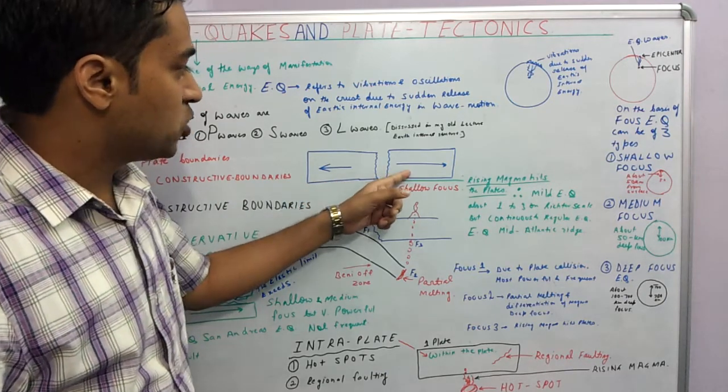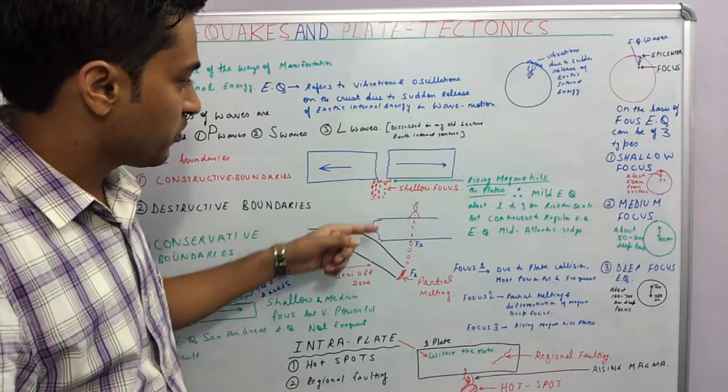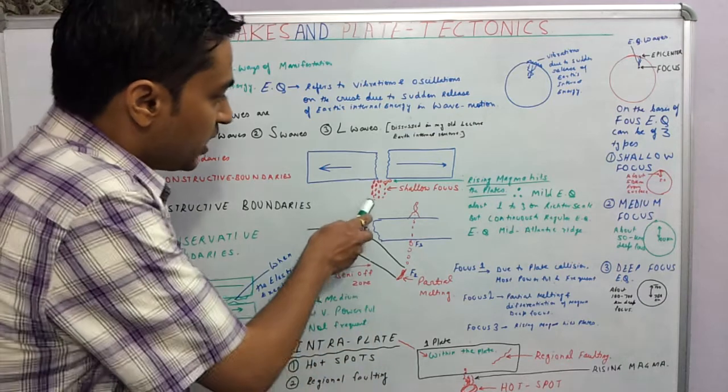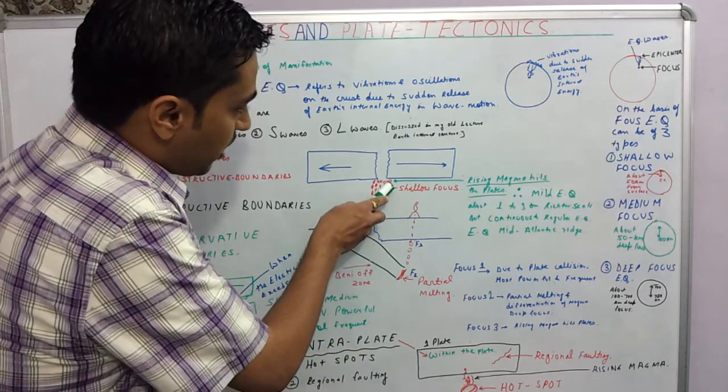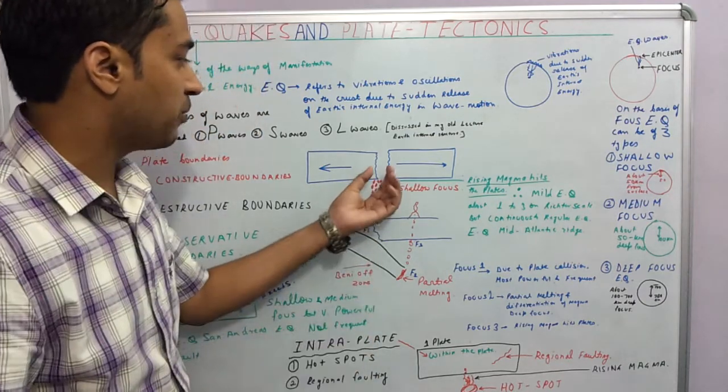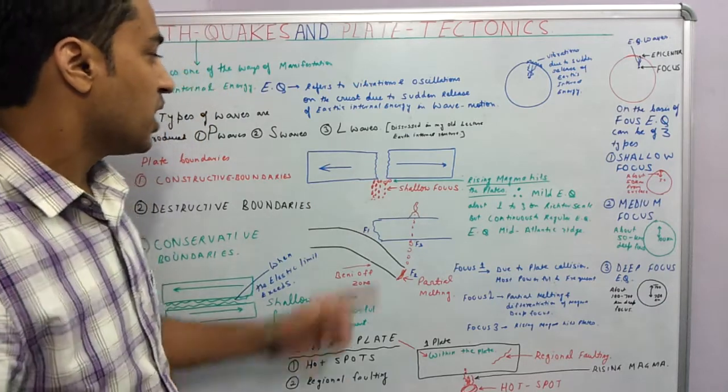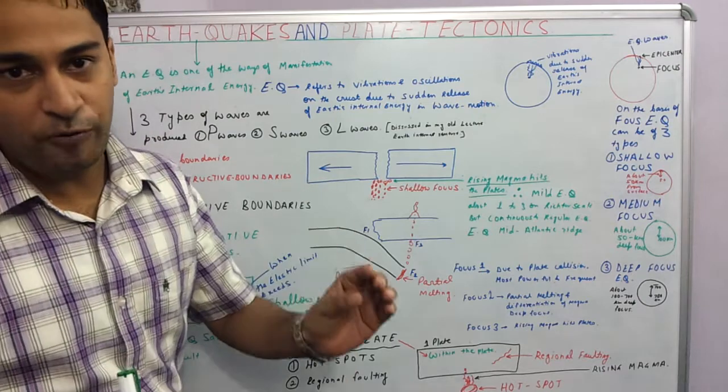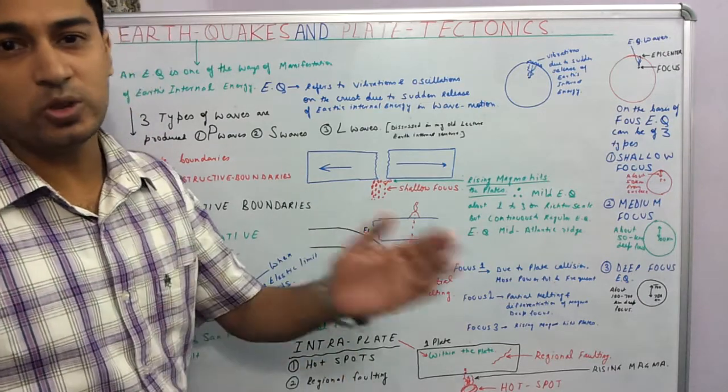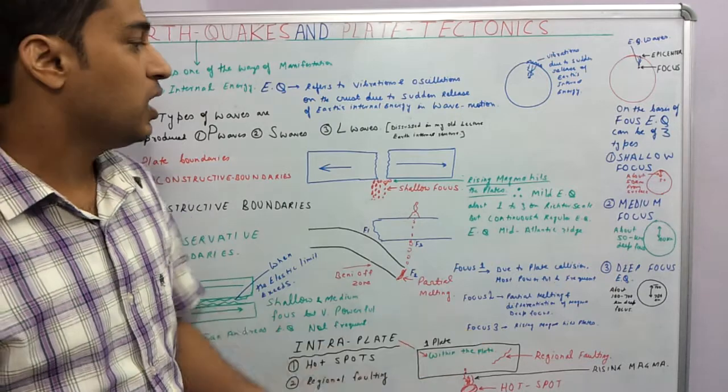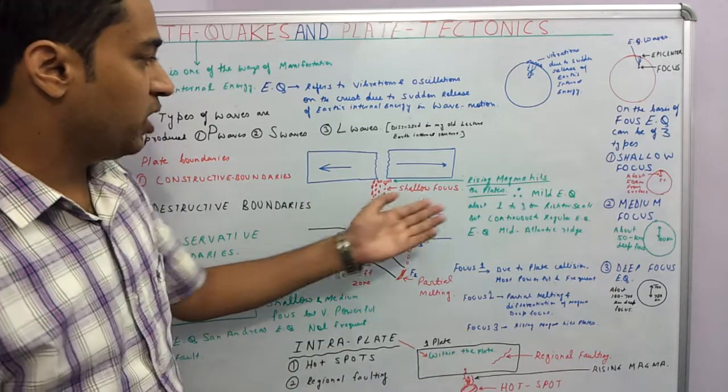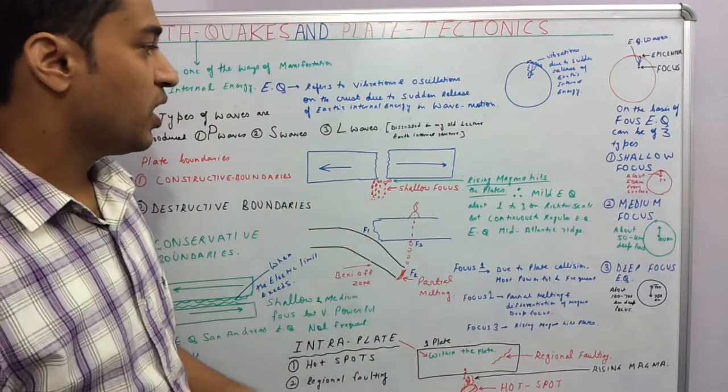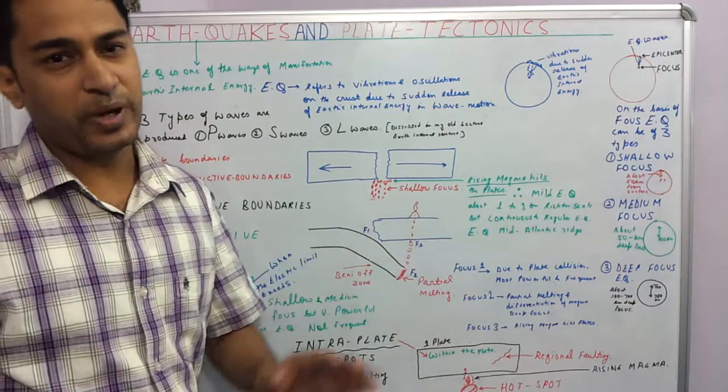Constructive plate boundaries are those in which two plates move away from each other. Here in this diagram we can see that since the plates are moving away, magma from inside the Earth is coming up, and this rising magma is hitting the two plates. And on account of hitting, earthquakes occur. Here the earthquakes are shallow focused, they are mild, approximately 1 to 3 on the Richter scale. A very good example would be the mid-Atlantic ridge, which is in the Atlantic Ocean. Here the earthquakes are continuous but not very strong.